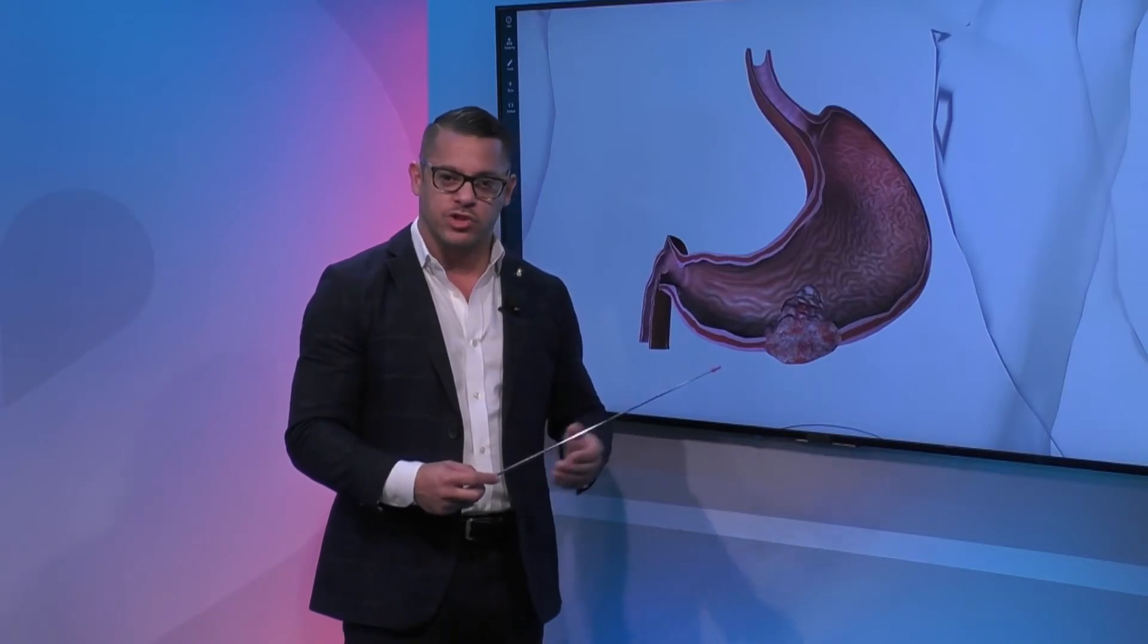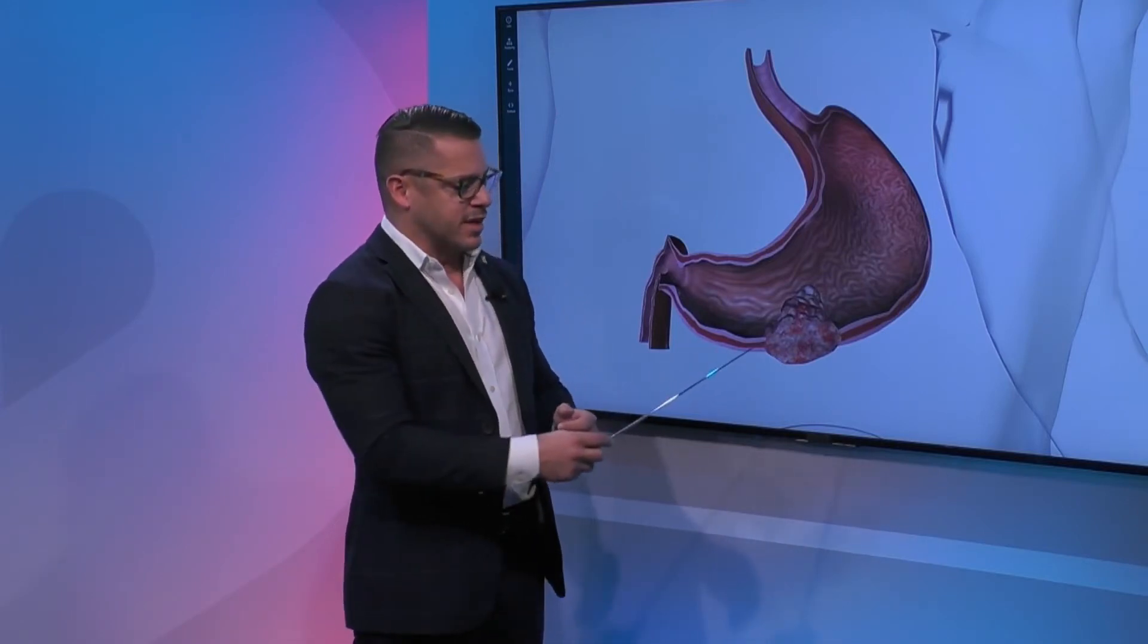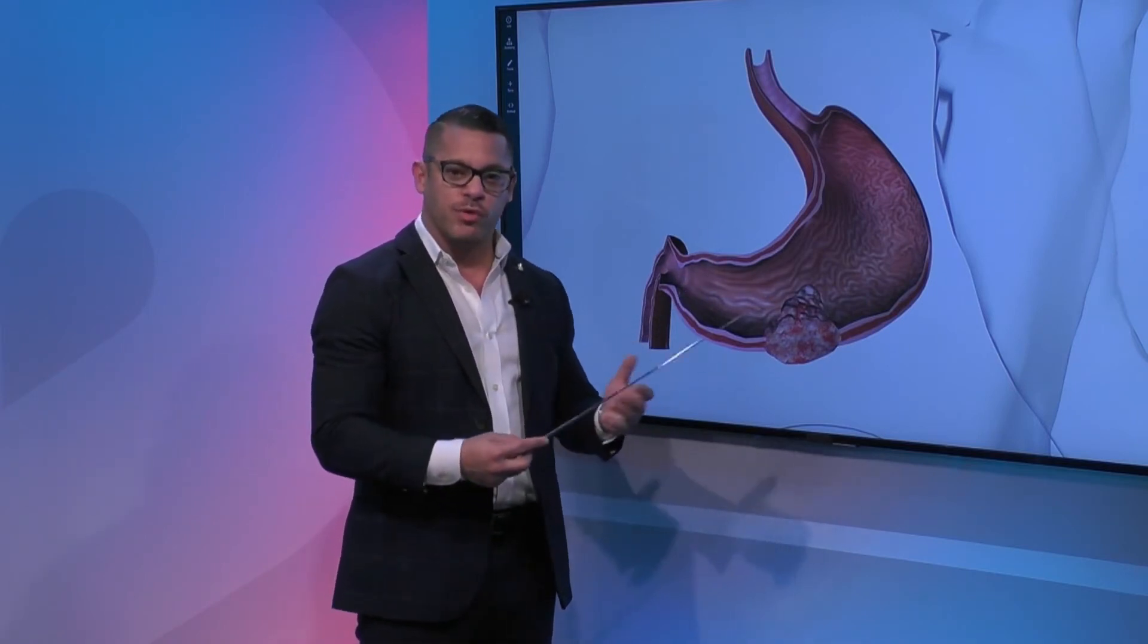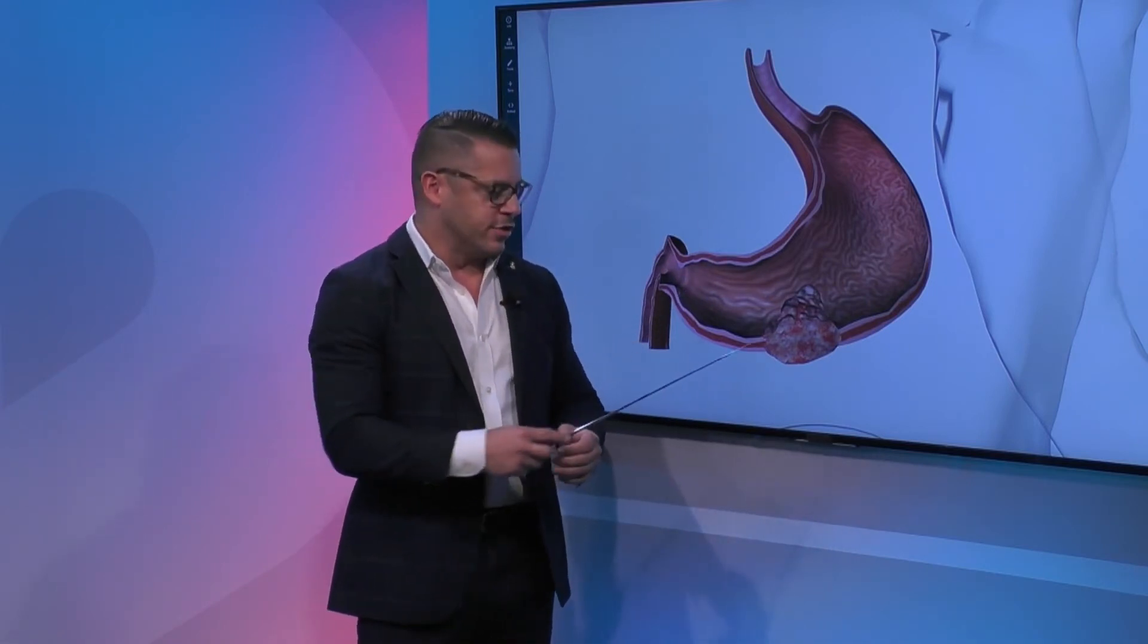We look at N which is for lymph nodes. The stomach has a serial lymph nodes that sit around the stomach, around the periphery, that as part of the operation we remove and we assess whether or not the tumor has spread to the peripheral lymph nodes.